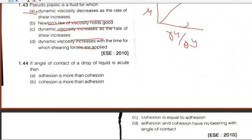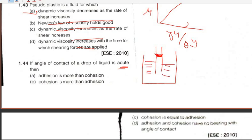Question 44: If the angle of contact of a drop of liquid is acute, this is the concave surface for water, which applies to wetting fluids. In this case the adhesion force is more than the cohesion force, so A will be the answer.